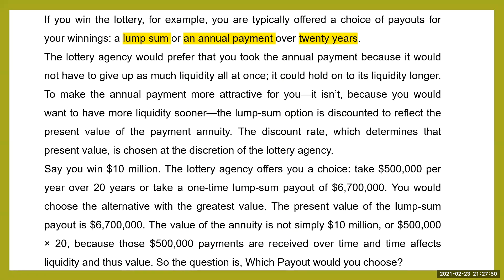For your assignment in lesson 5, this is a case study. If you win the lottery, you are typically offered a choice of payout: a lump sum or an annual payment over 20 years. The lottery agency would prefer that you took the annual payment because it would not have to give up so much liquidity all at once. To make the annual payment more attractive for you, since you would want liquidity sooner, the lump sum option is discounted to reflect the present value of the annuity. The discount rate, which determines the present value, is chosen at the discretion of the lottery agency.